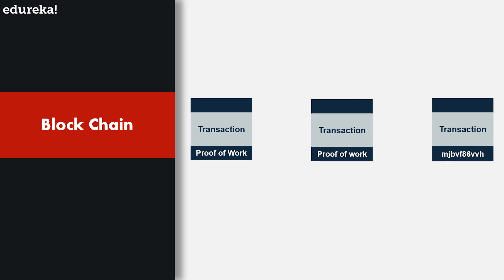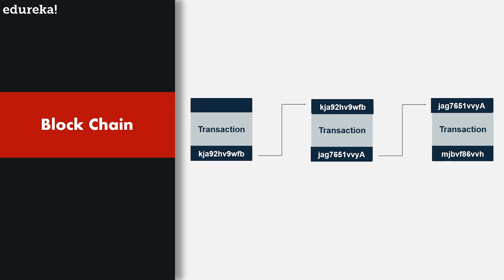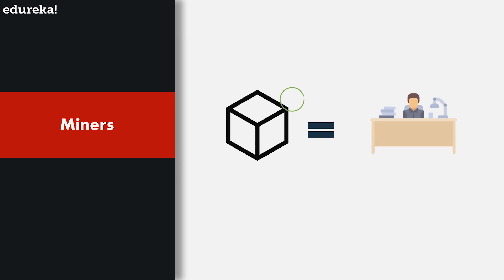To ensure a standard order to these blocks, each block must contain the hash of the previous block as its header. So a block contains the transactions, the proof of work, and the previous block's hash. Since each block hash is chained to the next, a certain chain is formed — and instead of just calling it a ledger system, this is why it's commonly known as a blockchain.